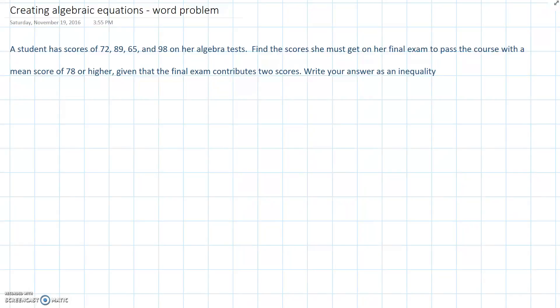A student has scores of 72, 89, 65 and 98 on her algebra tests. Find the scores she must get on her final exam to pass the course with a mean score of 78 or higher, given that the final exam contributes two scores. Write your answer as an inequality.